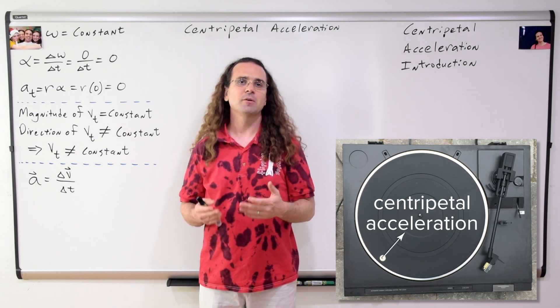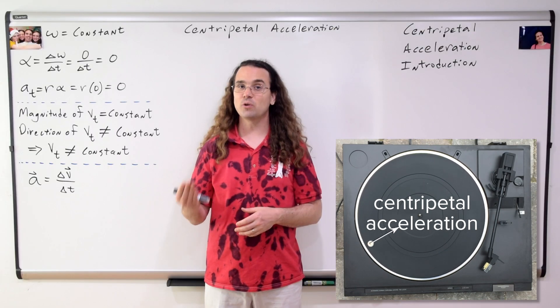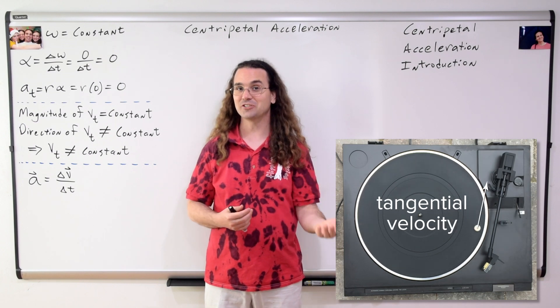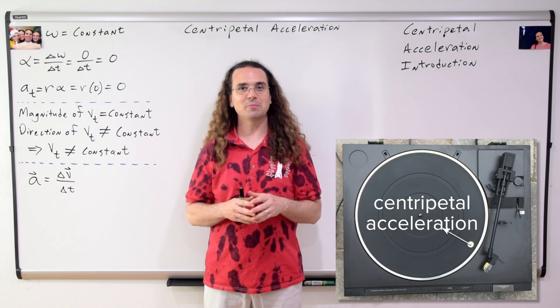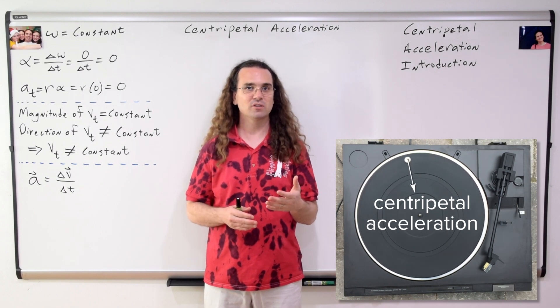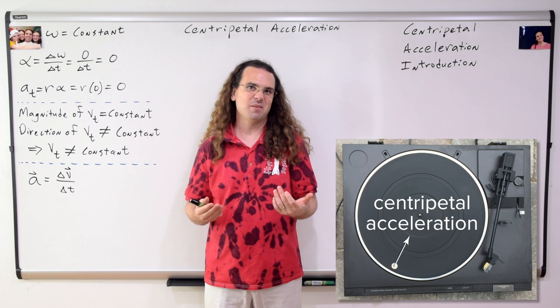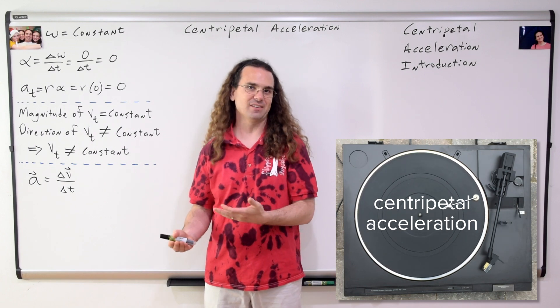Class, please say centripetal. Centripetal. Centripetal. Centripetal. Now say centripetal tangential. Centripetal tangential. Centripetal tangential. Centripetal tangential. I find students sometimes struggle to say those words, and if you can't say them, then you won't understand them.